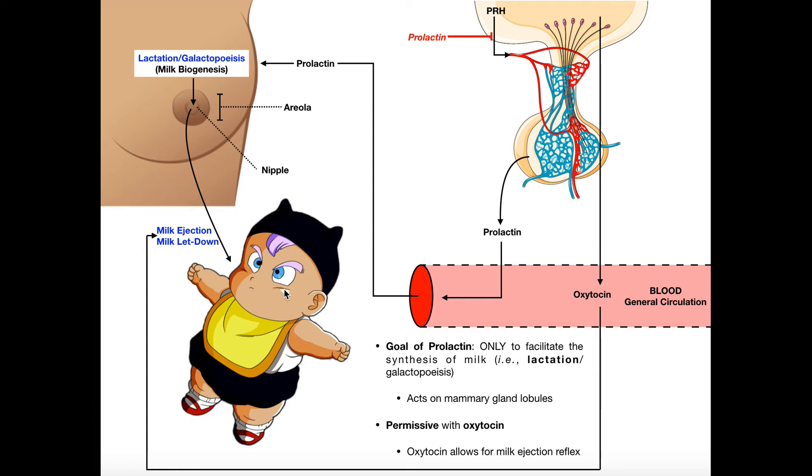So before we get into the functions and all that, let's talk about how prolactin is released. And it's going to be the same story that we've seen all along. So here's our hypothalamus up here. Our hypothalamus can generate this hormone called PRH, prolactin-releasing hormone. And prolactin-releasing hormone can then enter this network of blood vessels called the hypothalamic-hypophyseal portal system. This portal system carries prolactin-releasing hormone to the anterior pituitary gland, where it triggers the release of prolactin into the blood. And so prolactin will go throughout the general circulation, and the major site of activity is going to be at the mammary glands.